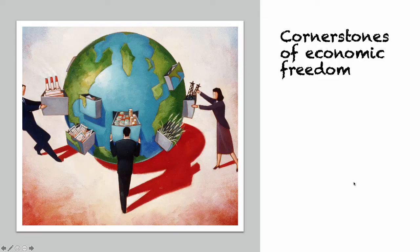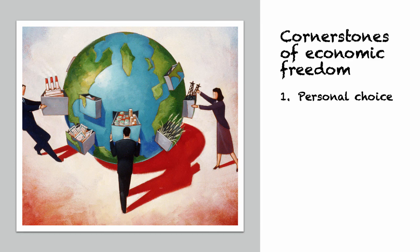There are lots of things that underlie economic freedom, but I want to focus on four cornerstones. The first is personal choice. People need to have the choice of what to produce, how to produce, and for whom things should be produced — those underlying questions of economic systems. If those are imposed upon you, you really aren't free, at least economically. There should also be voluntary exchange. You should not be forced into exchanging with people if there's no value in it for you — you should be able to make the transactions that are going to benefit you most.